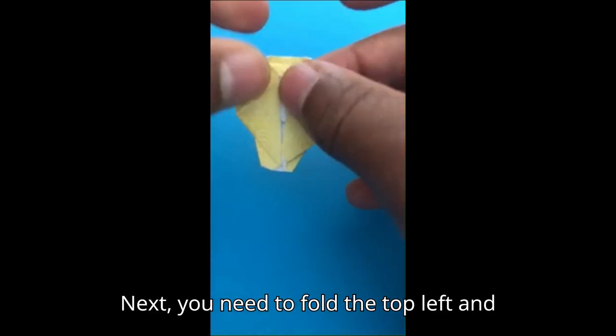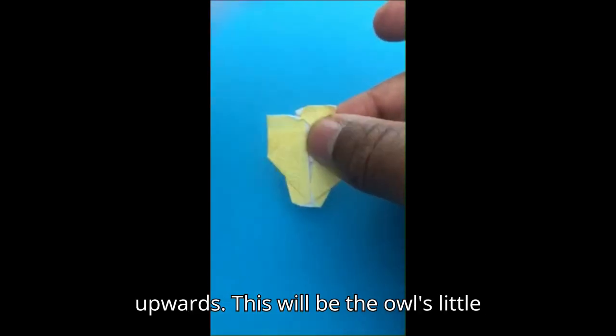Next, you need to fold the top left and right sides inwards, then move the tip upwards. This will be the owl's little tail.